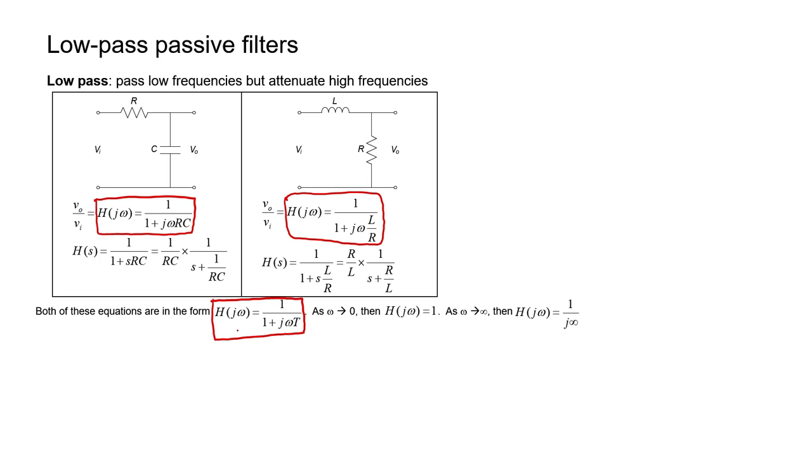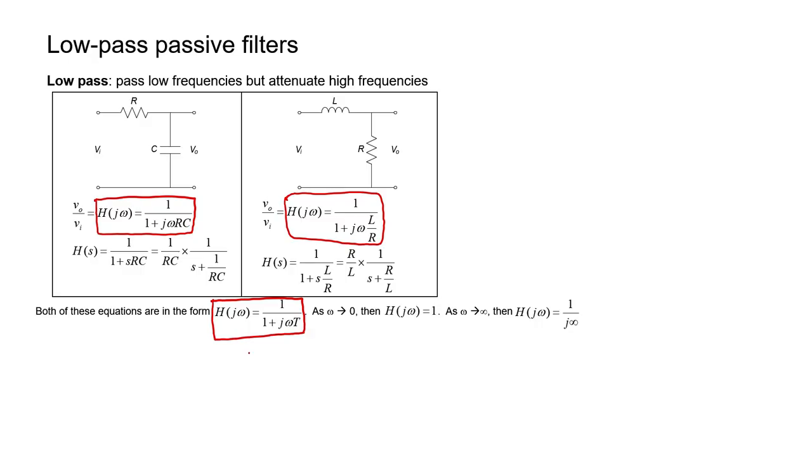Check out what happens to this expression when the frequency omega approaches zero. You see, the transfer function H just gets closer and closer to one the smaller the omega gets. In other words, if the transfer function is one, then the signal completely makes it through the filter because the output voltage is equal to the input voltage. But what happens if the frequency omega starts to get really high? What happens if the omega approaches infinity? Well, if omega approaches infinity, the magnitude of the denominator starts to grow very high. As the denominator gets larger, the fraction as a whole gets smaller and smaller and the transfer function goes to zero. That's why it blocks the high frequencies and that's what makes this a low pass filter.